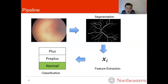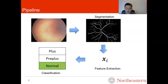The pipeline of building an automated ROP diagnosis system is as follows: first, in segmentation we convert colored ROP images to binary vessel masks; second, we extract vessel tortuosity and dilation related features; finally, we use a classifier to give a diagnostic decision.